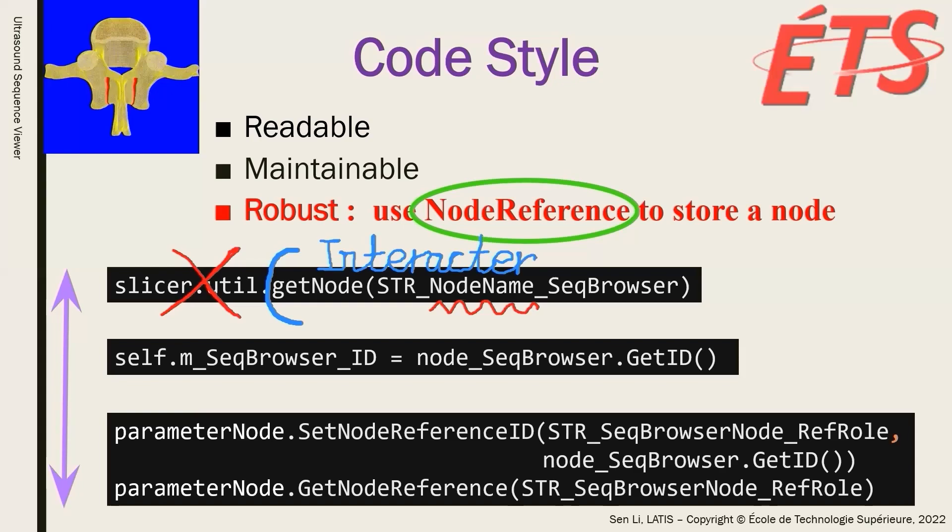The second method to get and store a node is using the node ID. However, it can be fragile because the 3D slicer automatically modifies the node ID when loading a new sequence file. It can be fine using the node ID within one method call, as the user cannot add or remove nodes while a method is running.